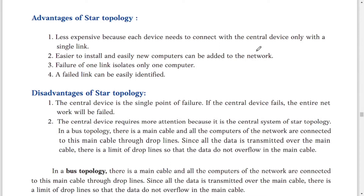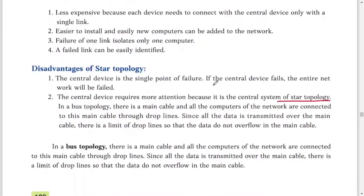Another advantage of star topology is that a link failure does not isolate the entire network, and a faulty link can be easily identified. If one computer fails, we can easily identify and replace or repair it. Disadvantages: the central device is the single point of failure — if the central device stops working, the whole network gets disturbed. The central device requires more attention since it is the central system of the star topology.